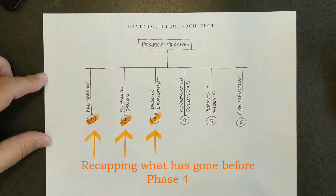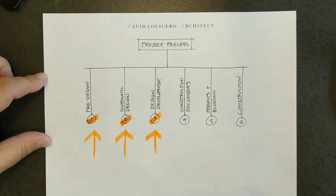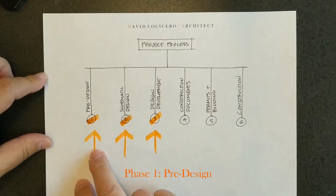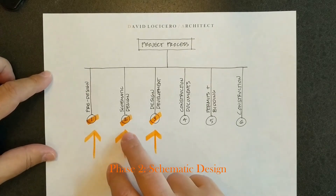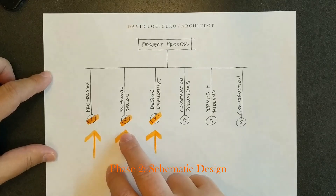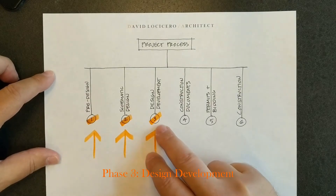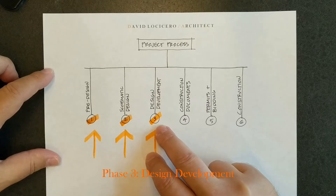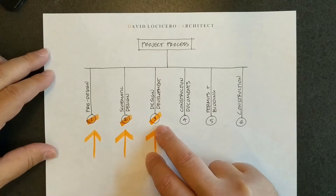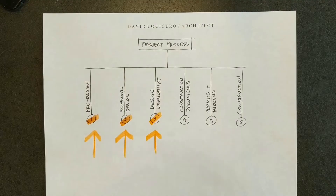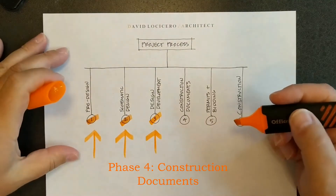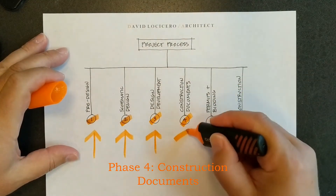Let's recap where we are in the architectural project process. We collected all the information we need in pre-design phase one. Then in phase two, schematic design, we worked through our options and came up with a design we like. Phase three was design development, where we started turning that design into reality by applying structure, mechanical systems, and selecting materials, fixtures, and fittings. And now we're here in phase four: construction documents.